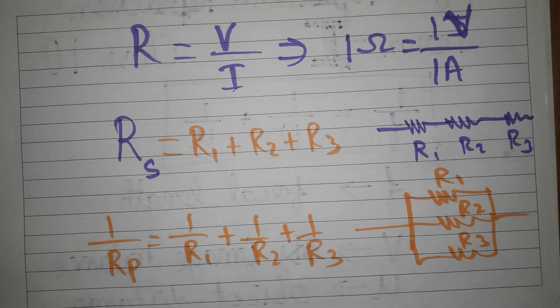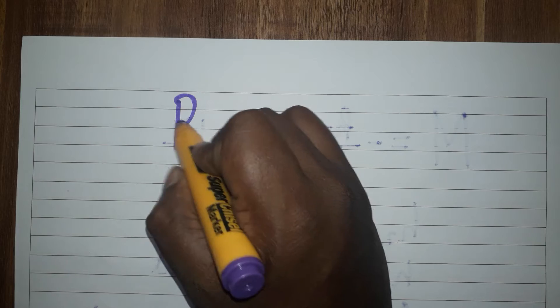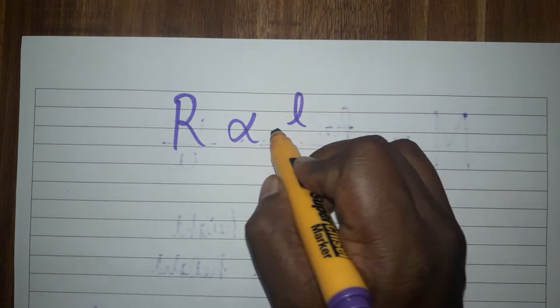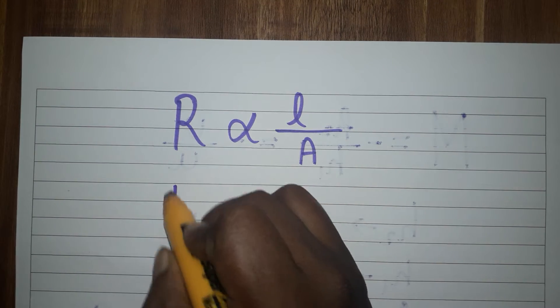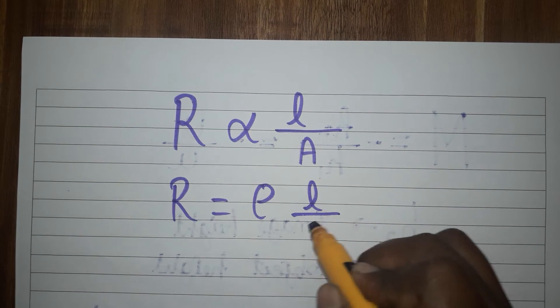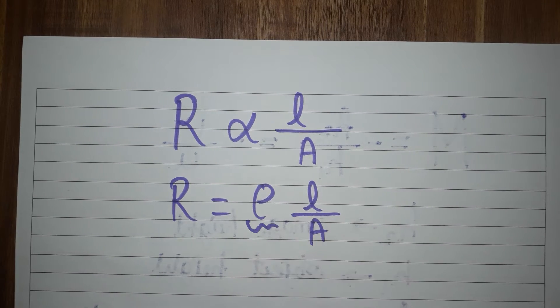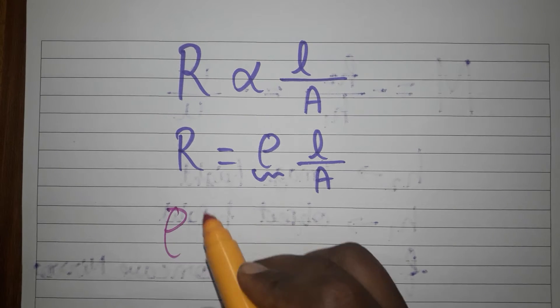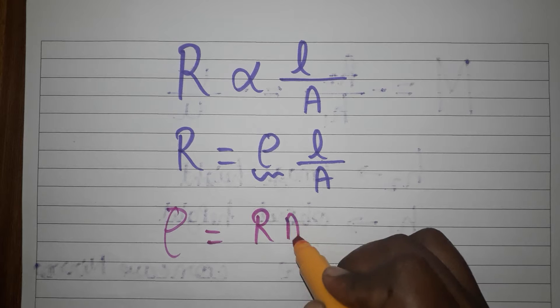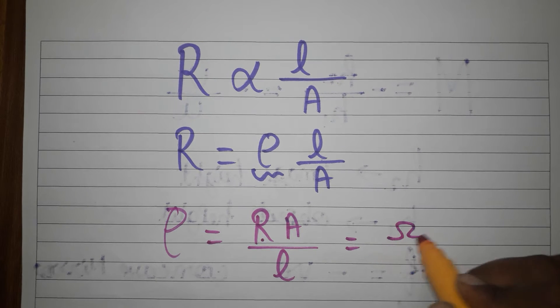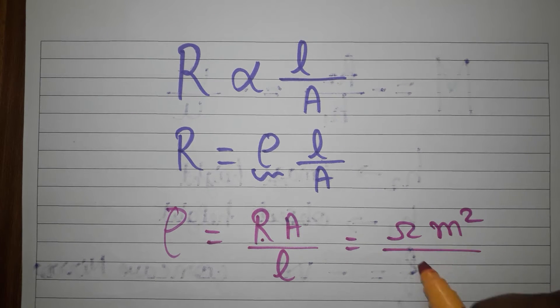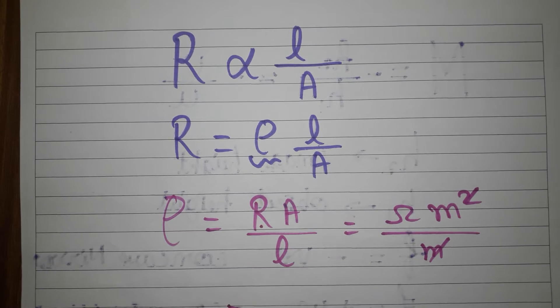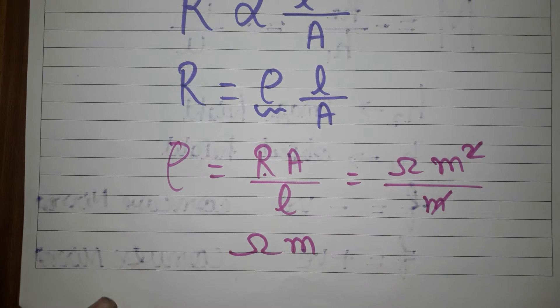Next, the resistivity formula. Factors affecting resistance are length, area, nature, and temperature. Resistance is directly proportional to length and inversely proportional to area, so resistance equals resistivity times length divided by area (R = ρL/A). Rearranging, resistivity equals resistance times area divided by length (ρ = RA/L). The unit of resistivity is ohm-meter.